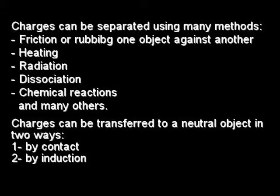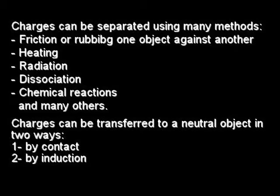Charges can be transferred to a neutral object in one of two ways: by contact or by induction. Objects can be charged by friction. When an ebonite rod is rubbed with fur, it becomes negatively charged. The same phenomenon happens when a glass rod is rubbed with a piece of silk, but in this case the glass becomes positively charged while the silk becomes negatively charged.